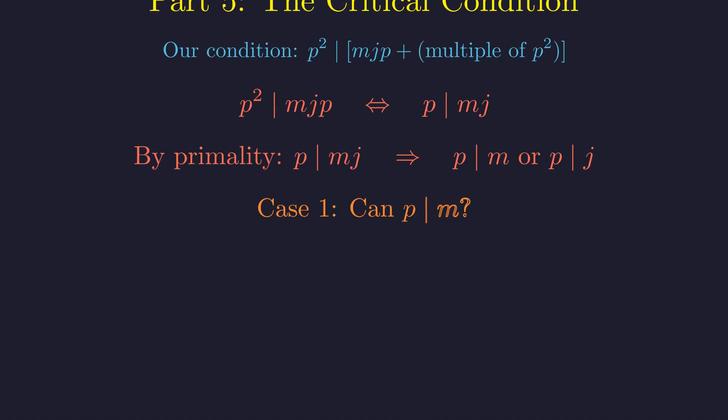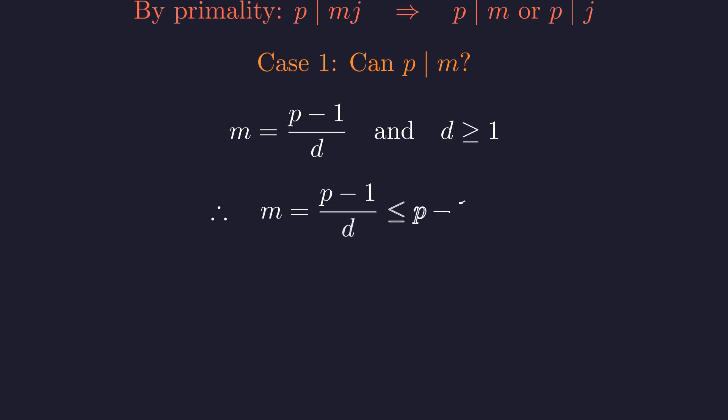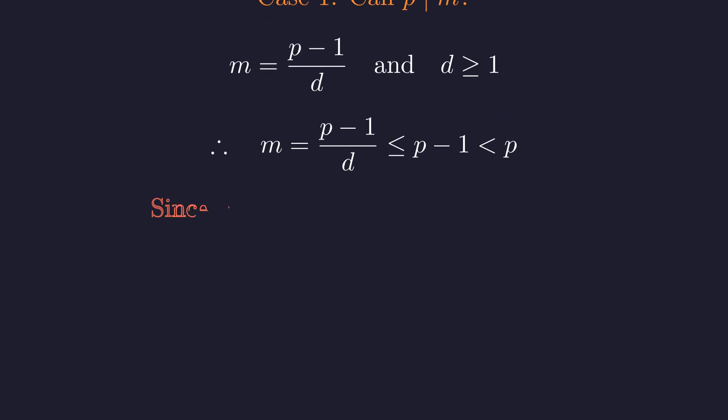Let's examine the first possibility. Can p divide m? Recall that m equals p minus 1 divided by d, where d is at least 1. This means m is at most p minus 1, which is strictly less than p. Since m is a positive integer less than the prime p, p cannot divide m. Case 1 is impossible.